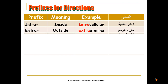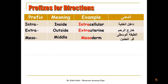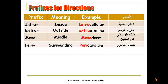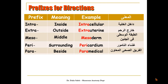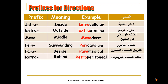'Extra' means outside, as in 'extrauterine'. 'Meso' means in the middle, as in 'mesoderm'. 'Peri' means surrounding something, as in 'pericardium'. 'Para' means beside, as in 'paramedical'. 'Retro' means behind, as in 'retroperitoneal'.